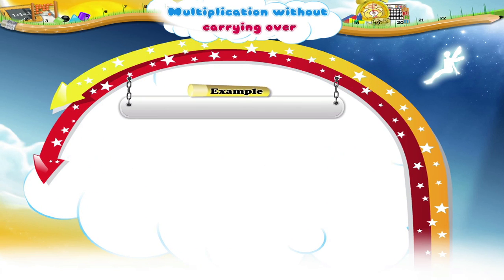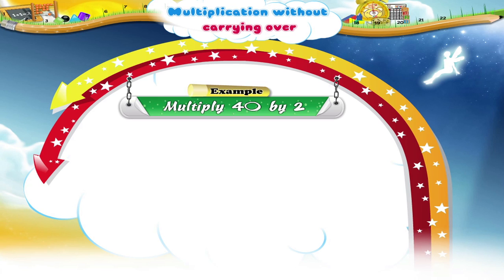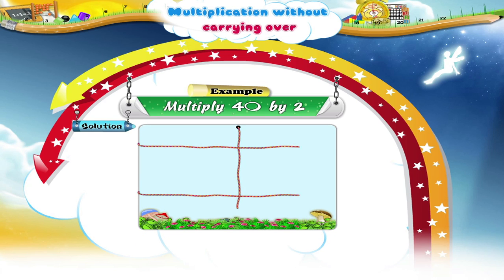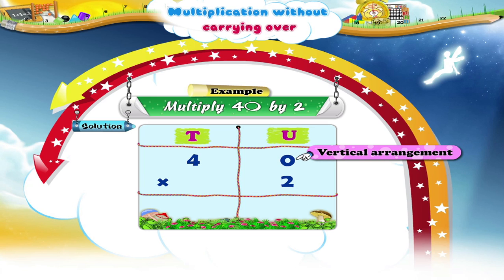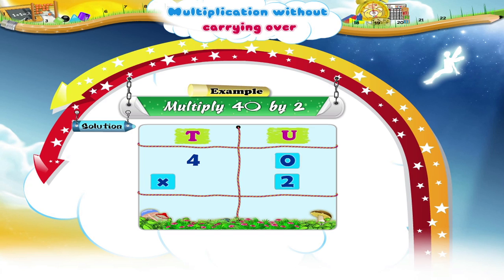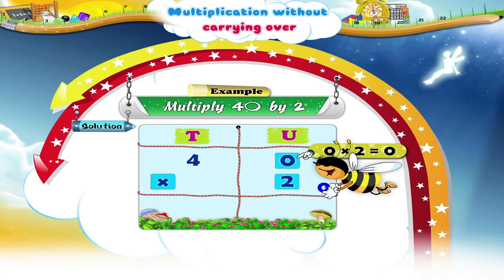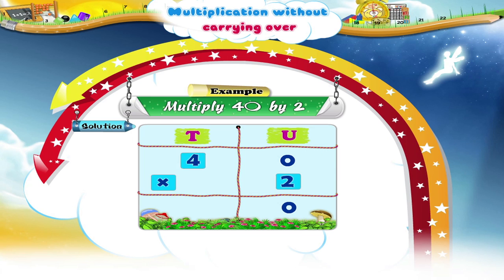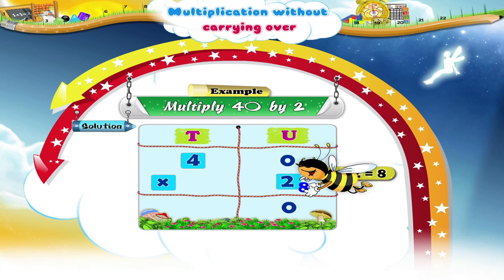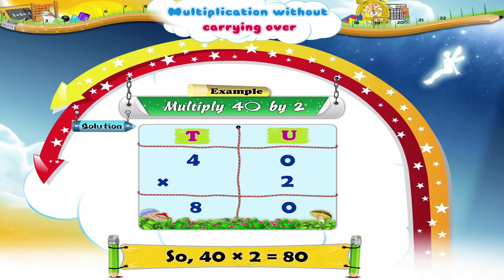And finally, multiply 40 by 2. 0 multiplied by 2 is 0. 4 twos are 8. The product is 80.